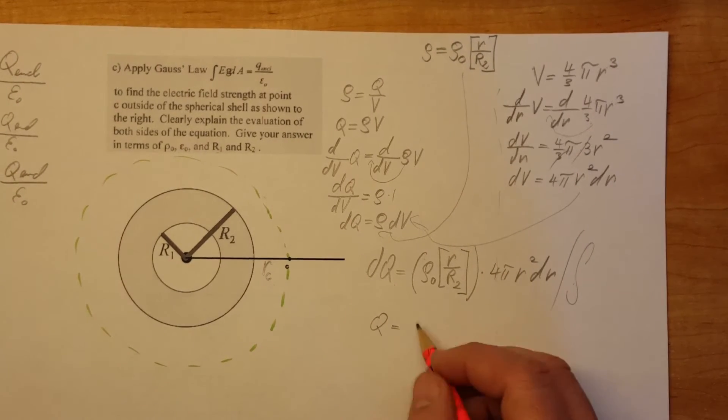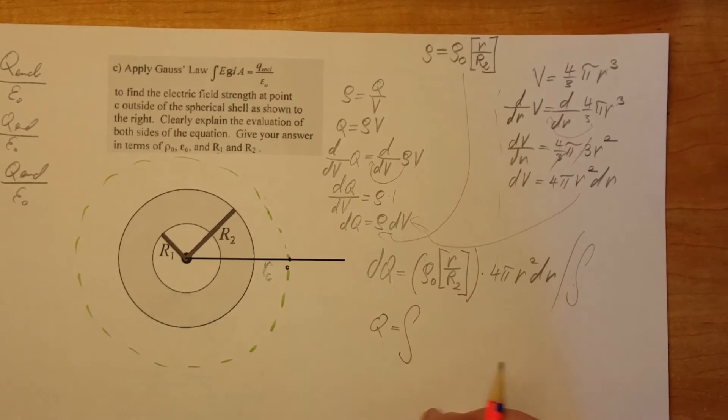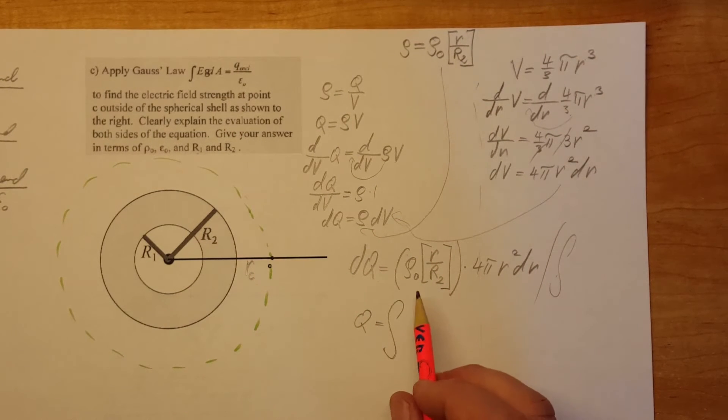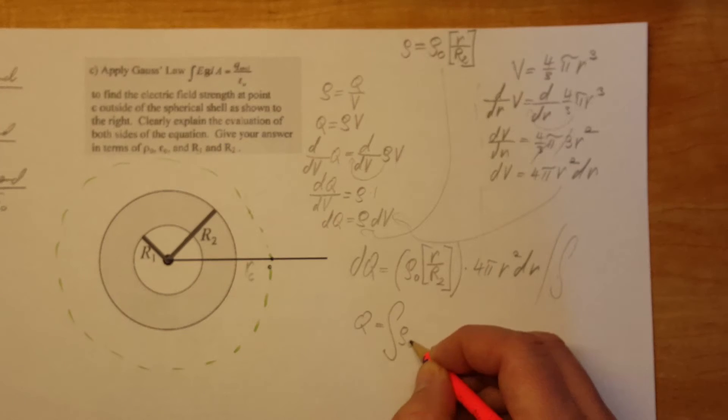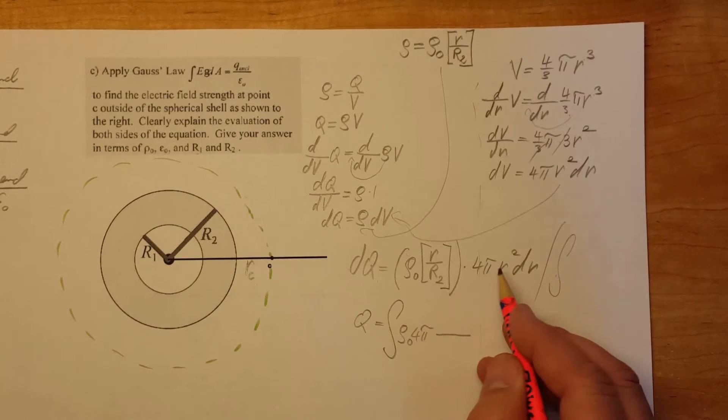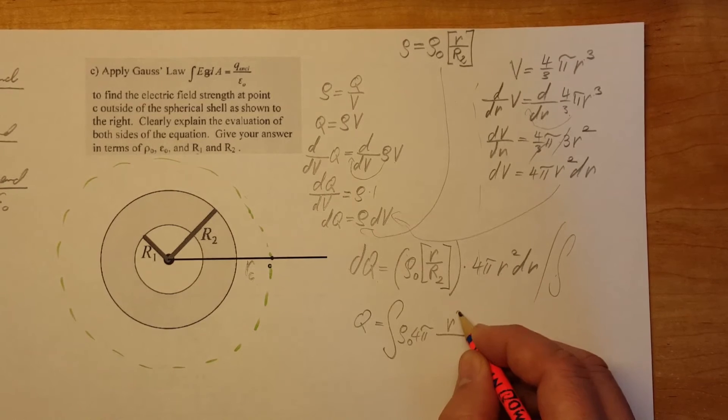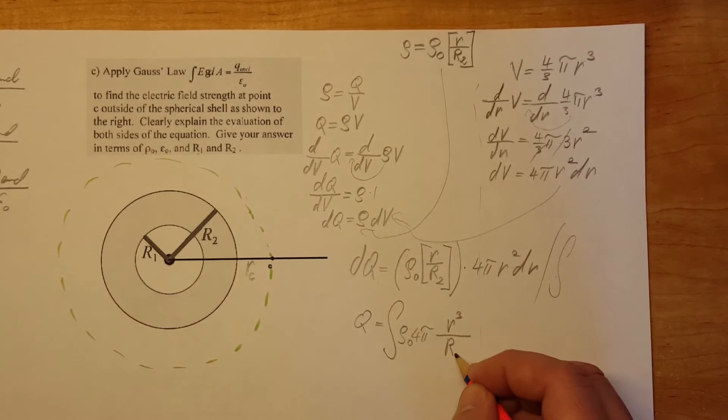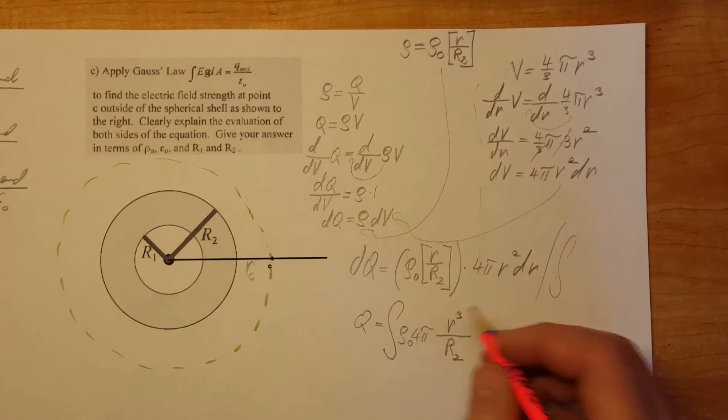And equals. We'll find the limits in a minute. And let's make this one look a little bit more presentable. So Rho 0, 4 pi. We're going to put R and R to the square together cubed. Or R2 and we have our dR.